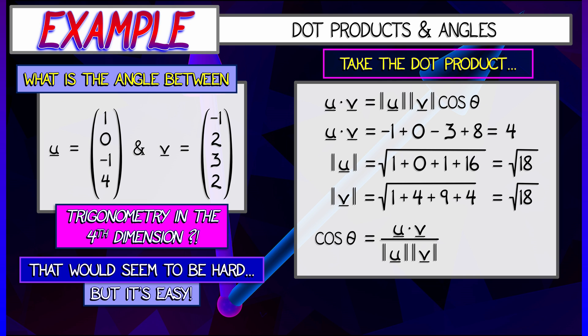This means that the cosine of theta can be obtained by the dot product of u with v, divided by these two lengths. That is, 4 divided by 18, which simplifies to 2 ninths.